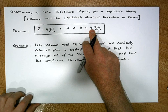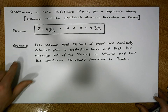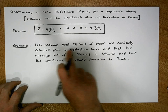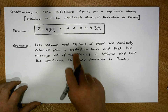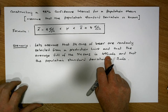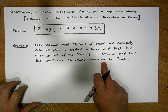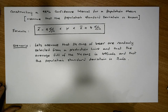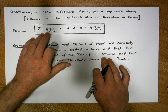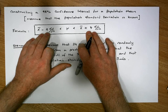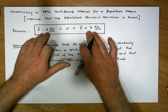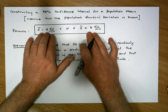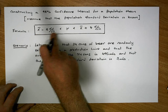In this particular scenario, we're going to assume that 24 cans of beer have been randomly selected from a production line, and that the average fill of the 24 cans has been recorded as 495 mils, and that the population standard deviation is 7 mils. What we'd like to do is construct a 98% confidence interval — in other words, calculate a lower bound and an upper bound for where the population mean would reside, so that we're 98% confident that the true population mean lies between those two bounds.